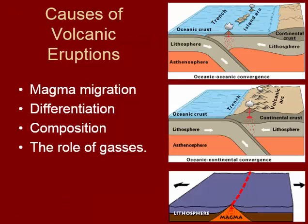Comparing our two convergent plate boundary types: at an ocean-ocean convergent boundary, there is less lithosphere for the magma to rise through, so less differentiation and partial melting occur. At a continental-oceanic boundary, there is much thicker crust, giving more time for both processes to change the magma composition. As a result, we can get very different rock types erupting at the surface.